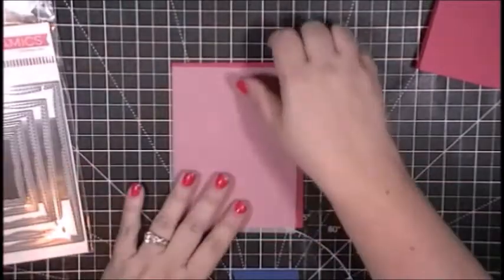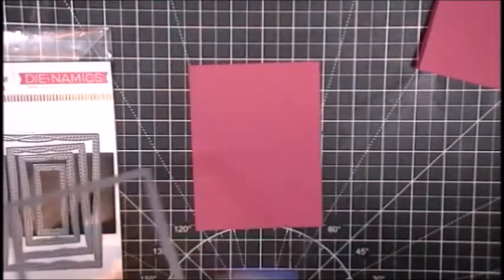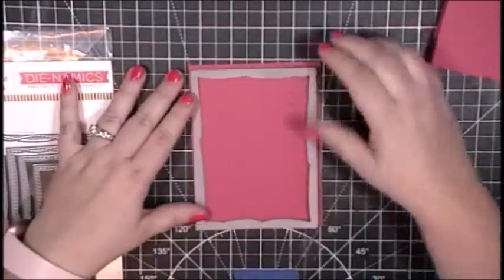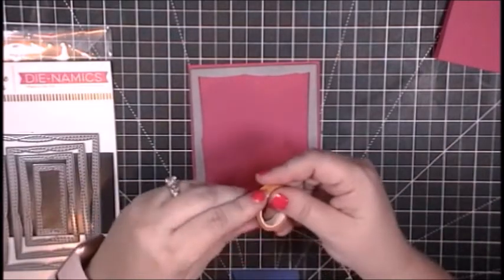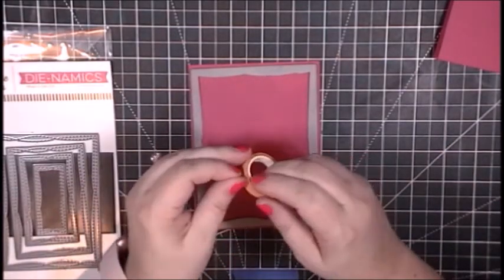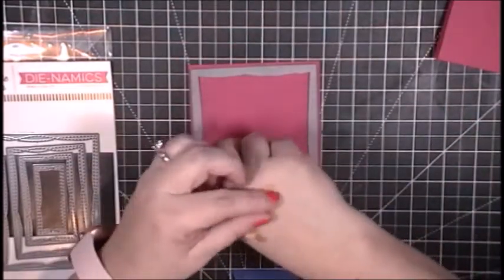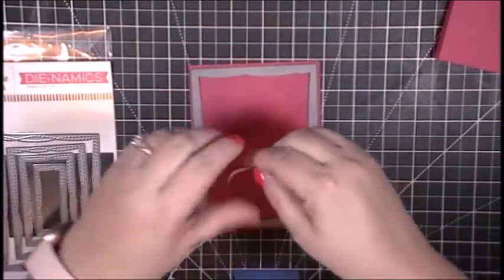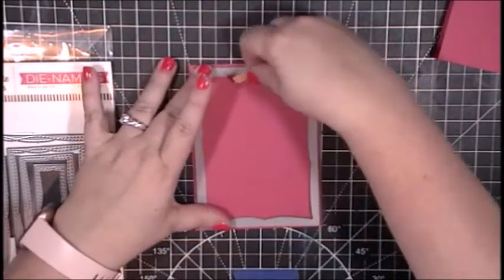My first step is to trim down my card front, and I wanted something just a little bit extra because the card front itself doesn't have a lot going on. So I will be using this My Favorite Things wonky stitched rectangles die. This die will take the card panel down to about four inches by five and a quarter inches, but it will also add that stitching around the outside edge.